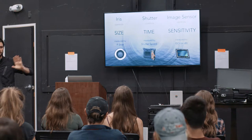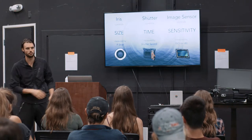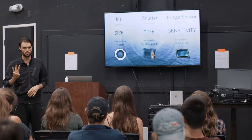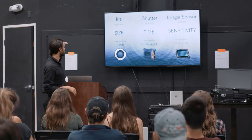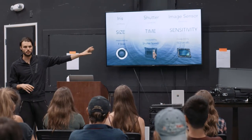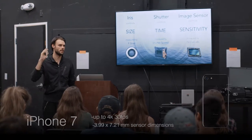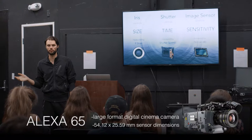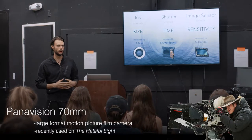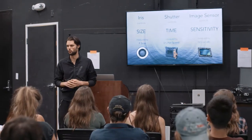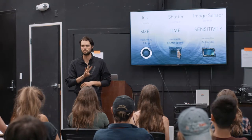Every camera you've ever worked with or seen that has ever been invented since the beginning of cameras — and probably will ever be invented — is basically just doing three things with light: size, time, and sensitivity. That's all a camera is doing. Whether it's your iPhone, whether it's the Alexa 65, whether it's a 70mm film camera — they're all doing the same basic elements with light. So whenever you pick up a camera, no matter how fancy it is, it's basically just doing these three things.